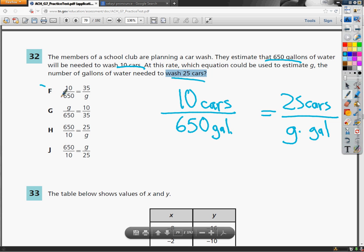I'm not really sure where 35 comes from, so F is out. G has 35 in it as well, so that's out. Now this one says 650 is on the top floor and 25 is on the top floor. Well, 650 is gallons and 25 is cars. You're mixing and matching your people in your asylum, so don't do that. So H is out.